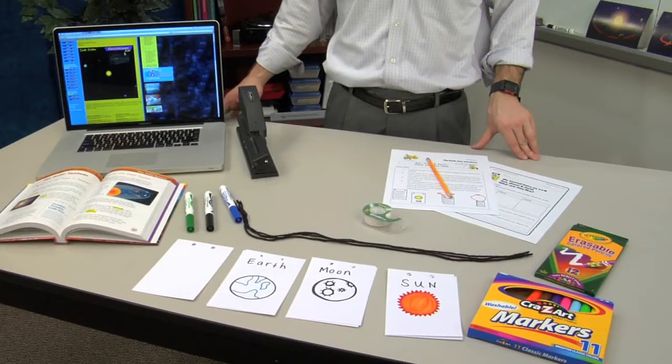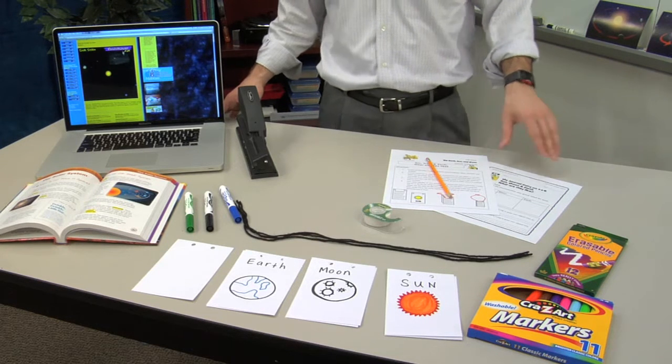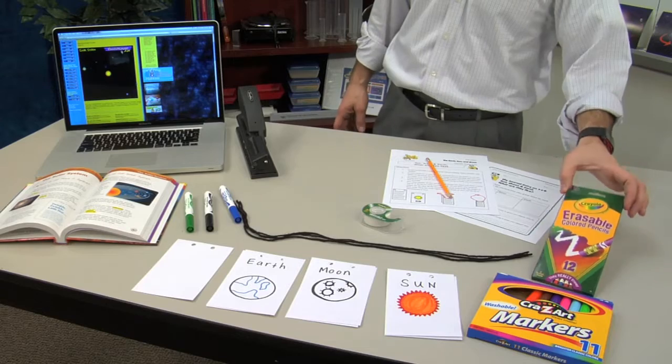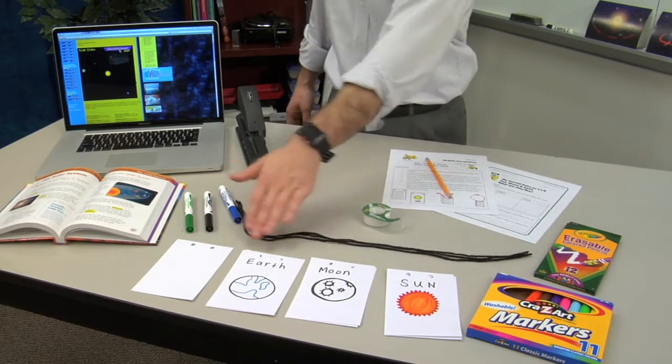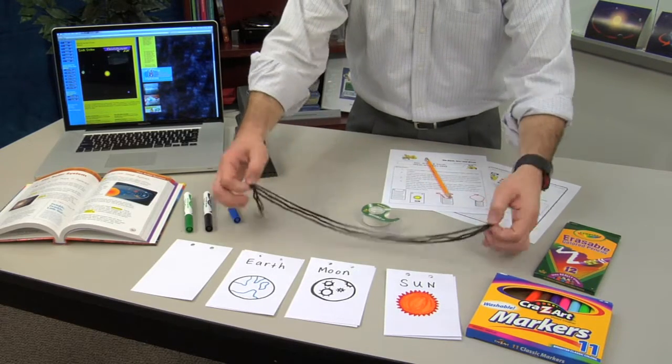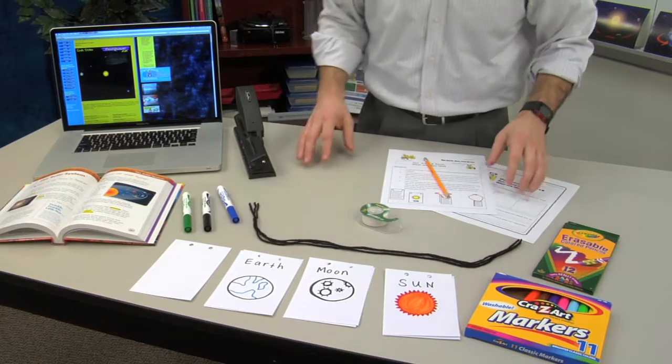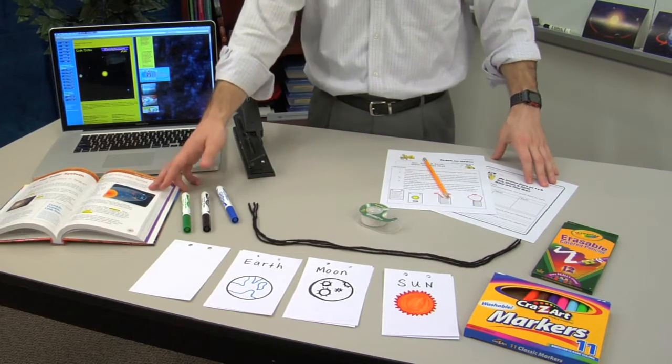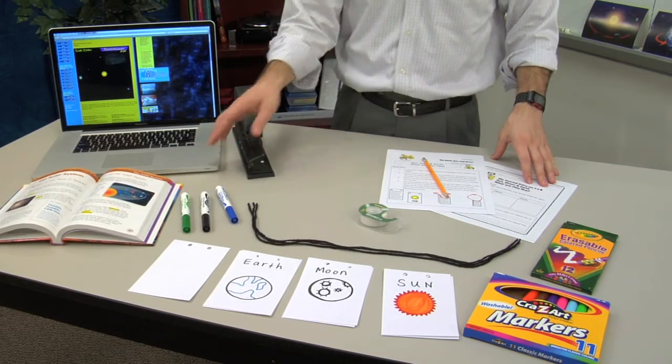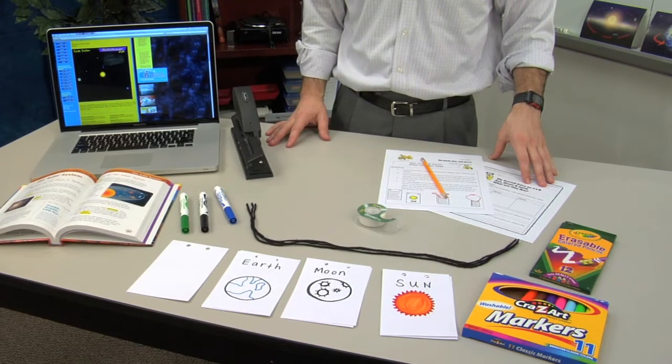Prepare the following items in advance for each member of your class: a set of colored pencils or markers, six index cards, approximately 60 centimeters of yarn, access to resources in print or online about the physical properties of the solar system, and a hole punch.